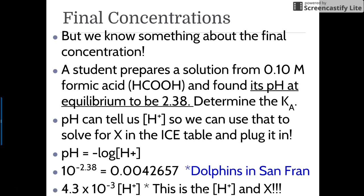However, since I'm a nice teacher, if you need help with that, email me, please. So anyway, with sig figs, don't forget pH, there's two digits after the decimal point, so we need two sig figs, so they rounded to 4.3 times 10 to the negative 3. That is your H+, and it's your X.